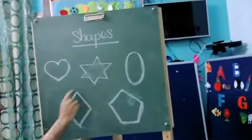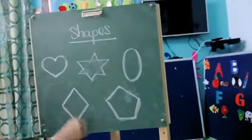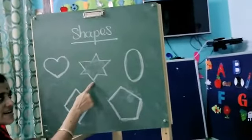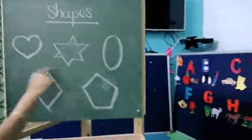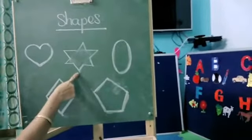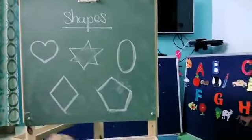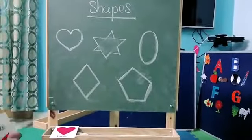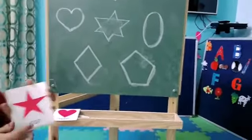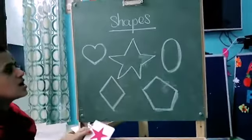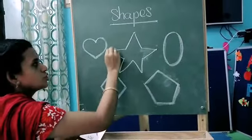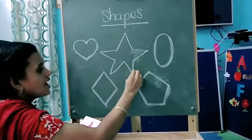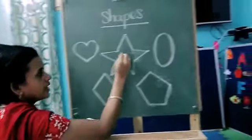Next, what is the shape? Come on, what is the shape? Yes, exactly — this is a star. Everybody, how many corners does the star have? One, two, three, four, five — five corners.